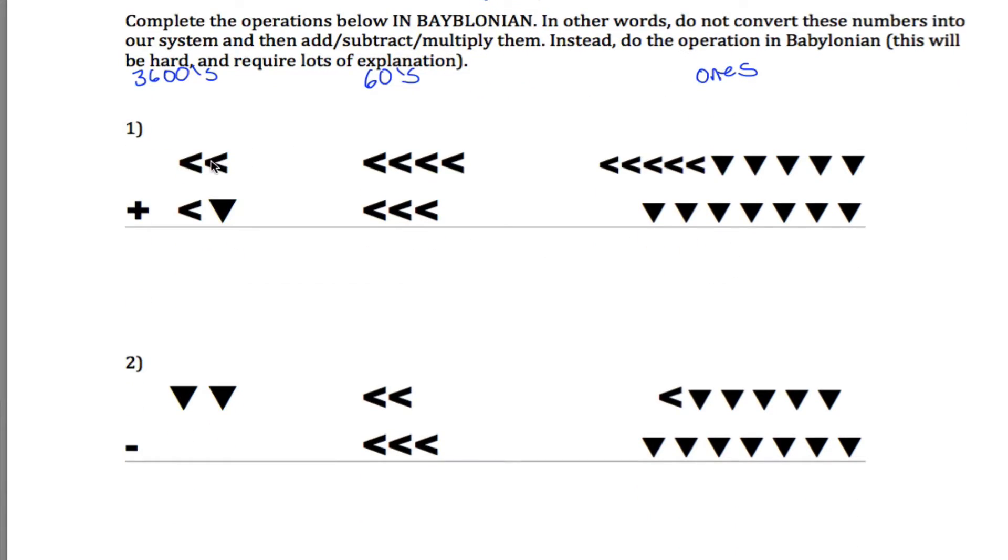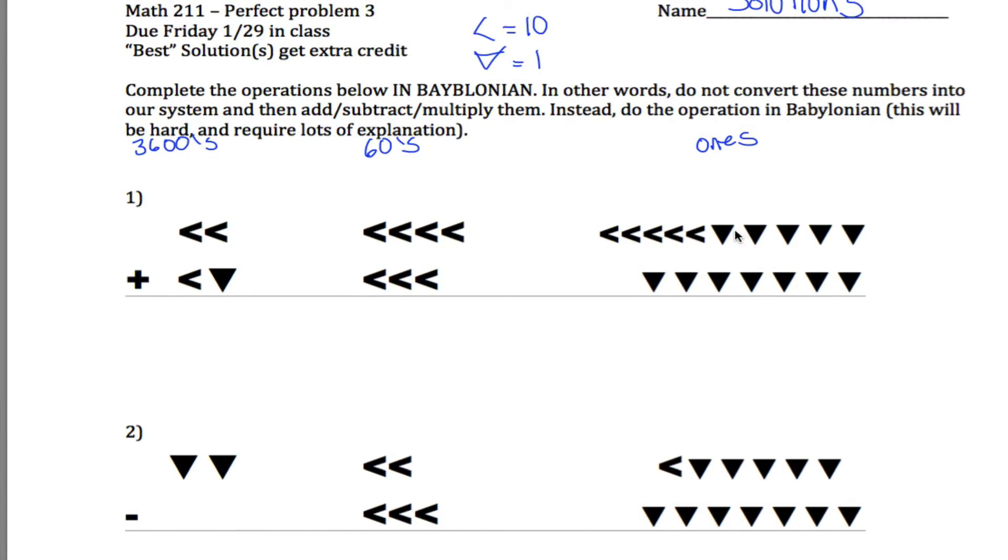So what you're doing is you're saying, here's one number right here. Here's the 1s digit, the 60s digit, and the 3600s digit. And you're adding that to this down here. It's tempting to just take all these symbols and write them down here in the 1s place. But just like if you were adding 15 and 26, you'd add the 5 and the 6, but you wouldn't write 11. You'd write 1 and you'd carry the other 1 over.